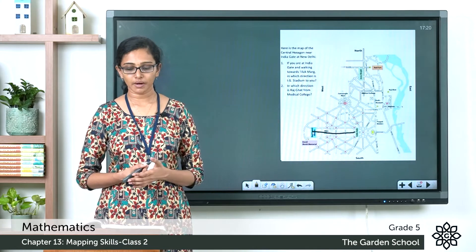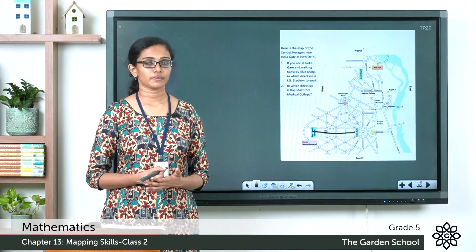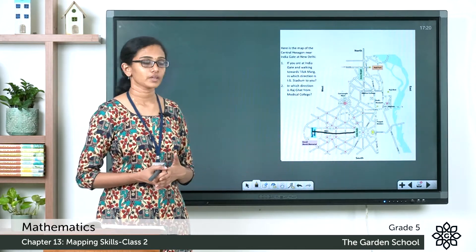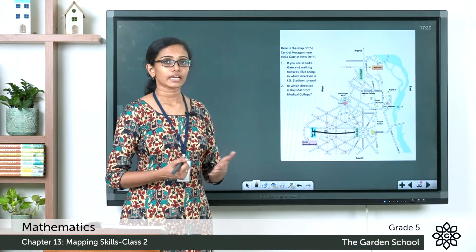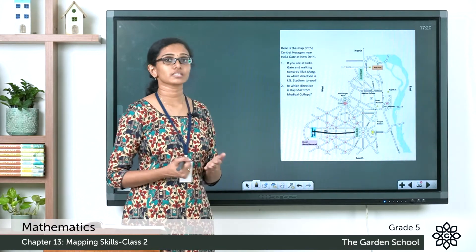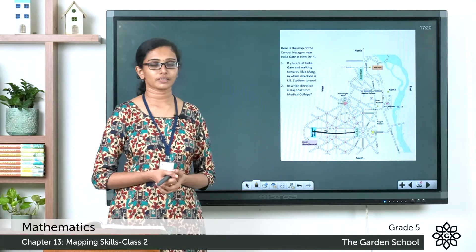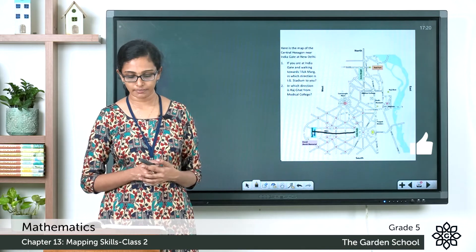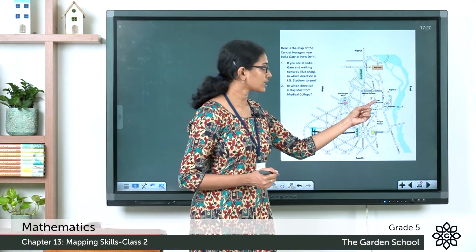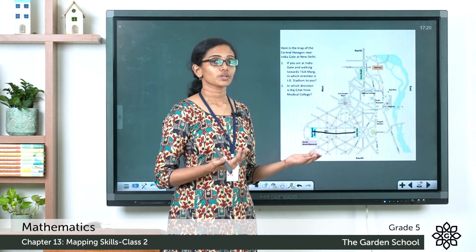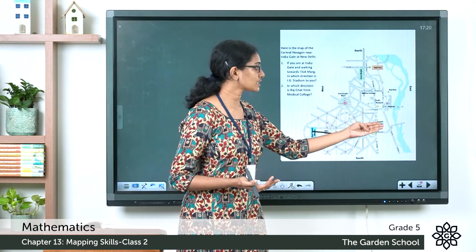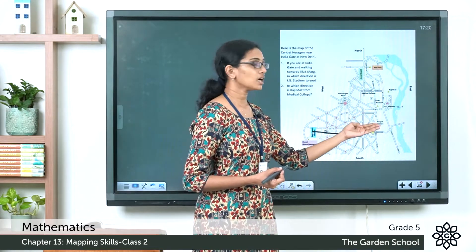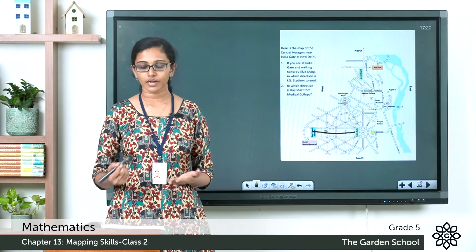The fifth question: Dandimar's memorial lies to the dash of Rashtrapati Bhavan. From this route map we can say Dandimar's memorial is located to the south of Rashtrapati Bhavan. The sixth question: Dolls Museum lies to the dash of Pragati Maidan. The Dolls Museum is located to the north of Pragati Maidan, so you can write north there.